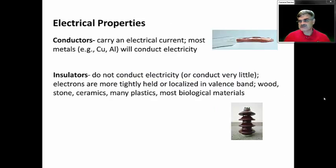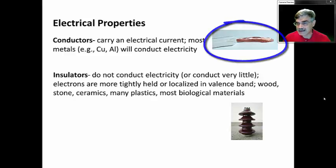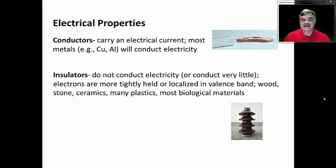Moving on to electrical properties of materials — in general, matter can either conduct electricity or not conduct electricity. Conductors of electricity carry electric current; most metals are conductors. Copper is a very good conductor, as is aluminum. Other materials are insulators — they do not conduct electricity, or conduct very little. In our wires, the plastic insulation on the outside is an example of a material that does not conduct electricity.